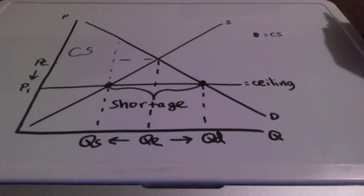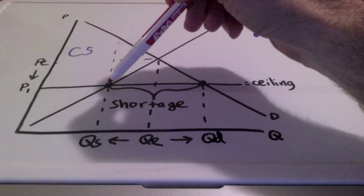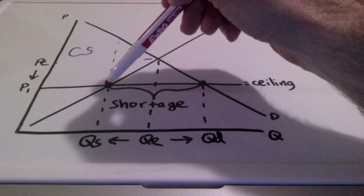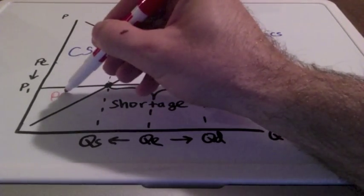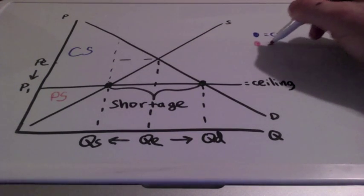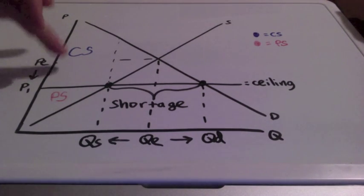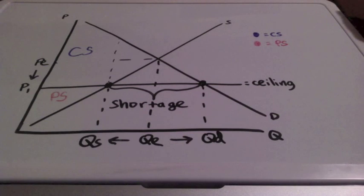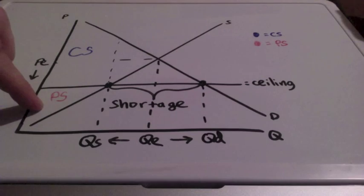For producer surplus, we find our new price and our first plotted point, which is quantity supplied. From this point on down in red represents producer surplus. Keep in mind, the goal is for consumers to benefit from this price ceiling, so the consumer surplus area is going to be larger than the producer surplus area.